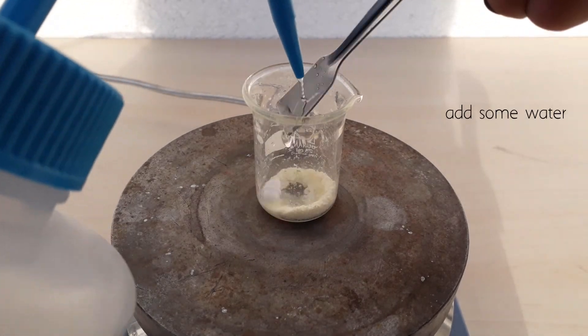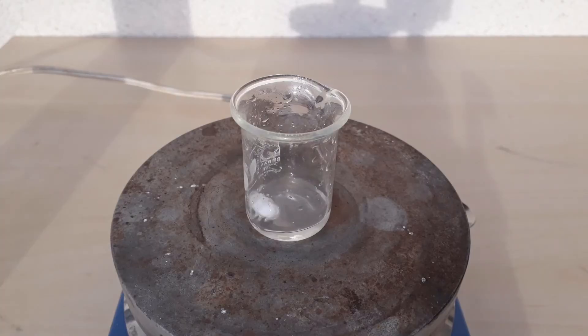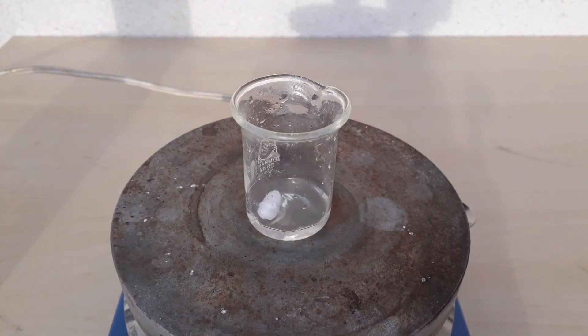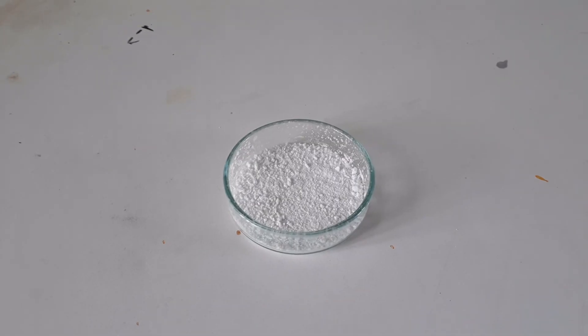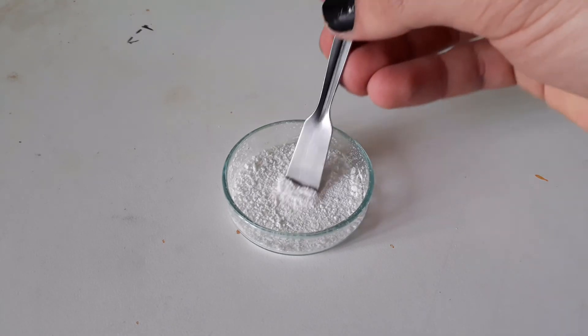To clean up the material I add a small amount of water and bring the solution to a boil. I filter it into a Petri dish and boil it to dryness.